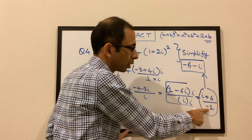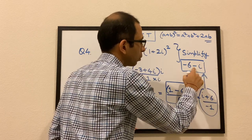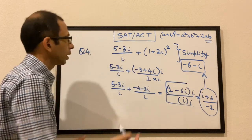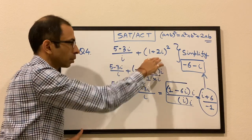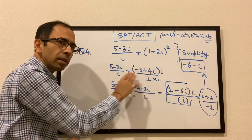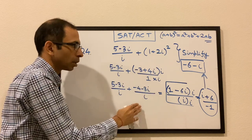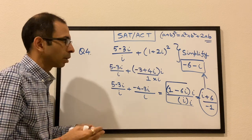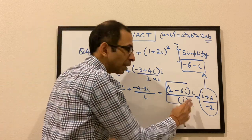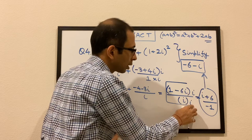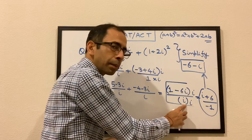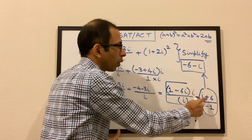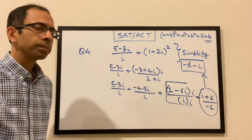Dividing by −1 changes both signs, giving the final answer: −6 − i. To summarize: we expanded (1 + 2i)², added the fractions with a common denominator, then rationalized by multiplying by i/i to eliminate i from the denominator.